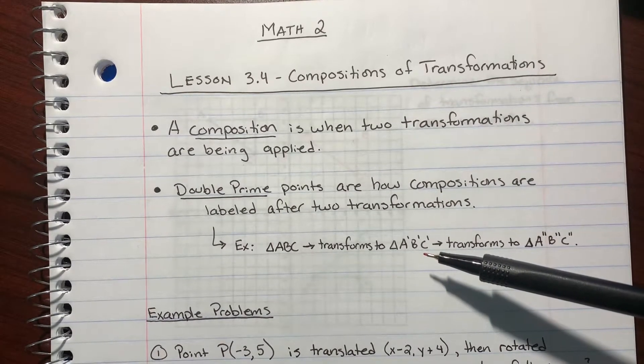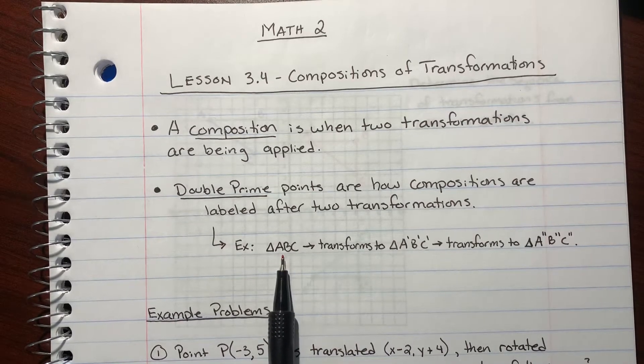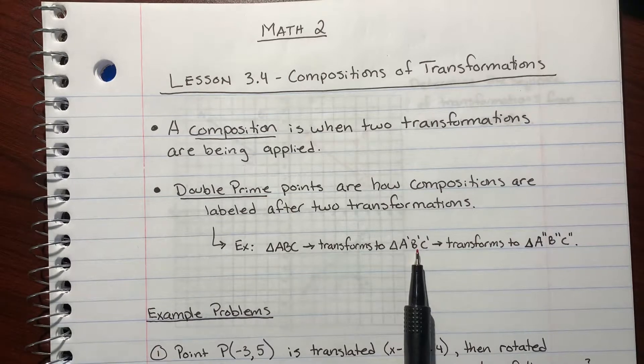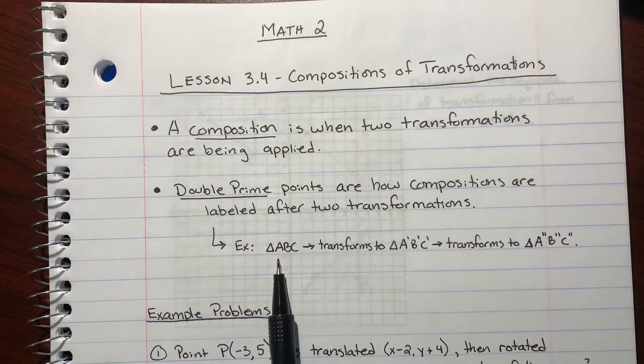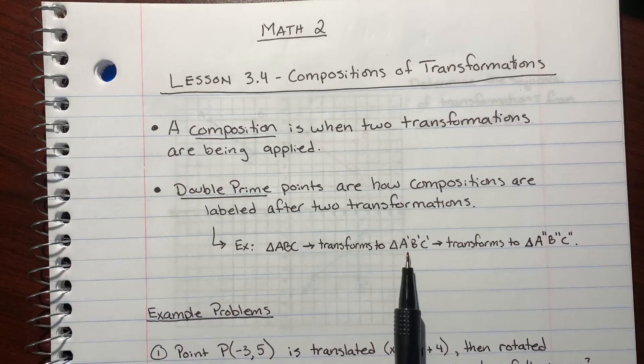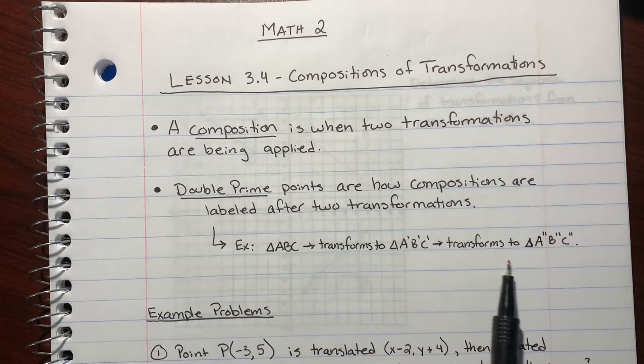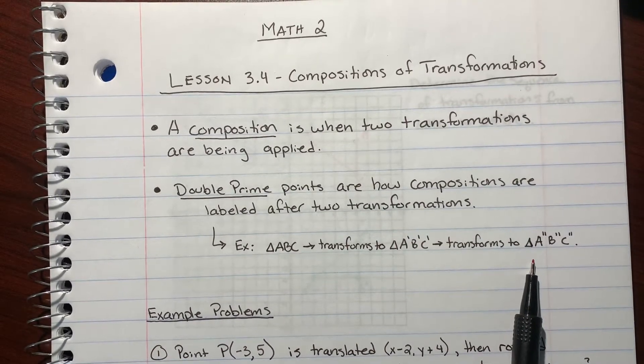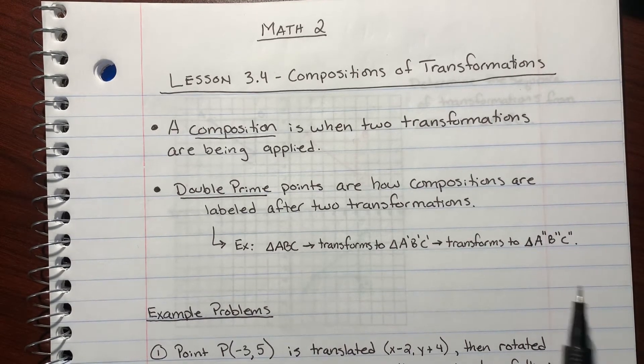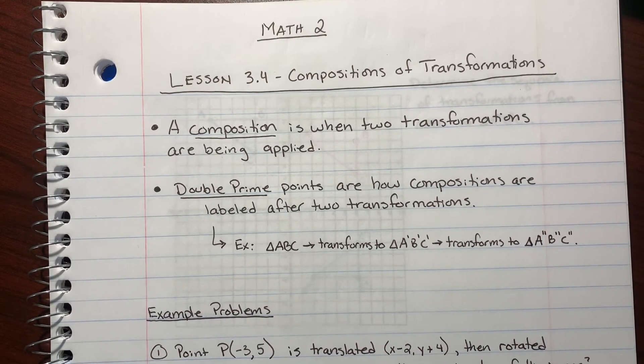But then after you apply your second transformation, first off, you don't apply it to the original. You apply the second transformation to your new prime points. So you apply one transformation, you get this result, and then you apply your second transformation to these points. And that's when they become known as the double prime: Triangle A double prime, B double prime, C double prime. It's just denoted with two little tick marks.